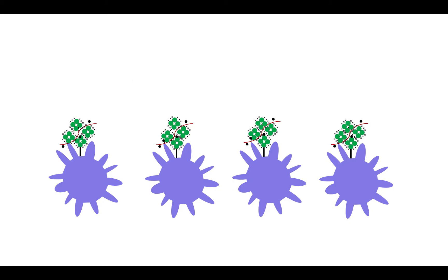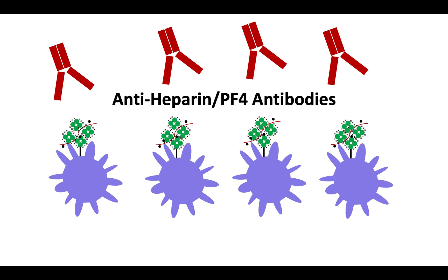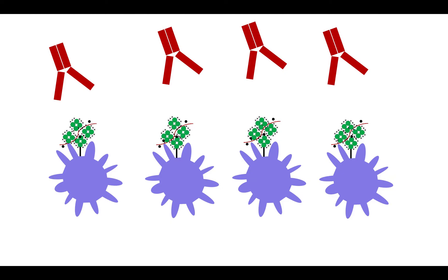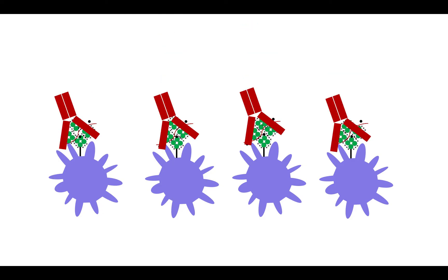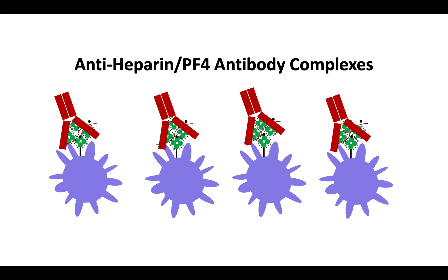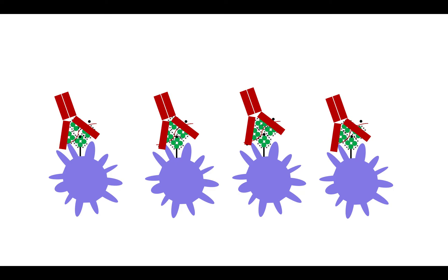A subset of patients recognize these heparin-PF4 complexes as foreign and form anti-heparin-PF4 antibodies. These heparin-dependent antibodies usually develop between 5 and 8 days after heparin exposure. These antibodies bind to the PF4 on the platelet surface, forming anti-heparin-PF4 antibody complexes. Note that the fragment crystallizable, or FC region of the antibody, is the tail part of the antibody, which interacts with cell surface receptors.